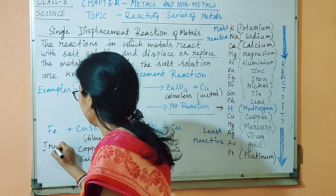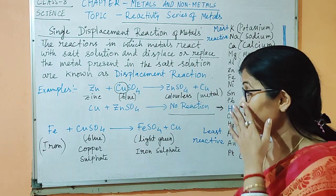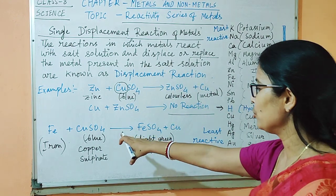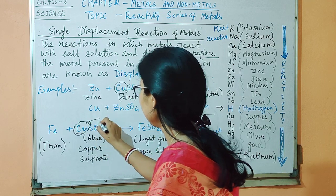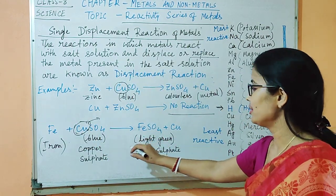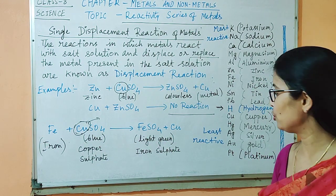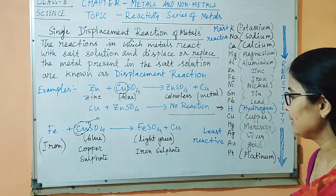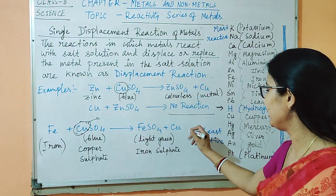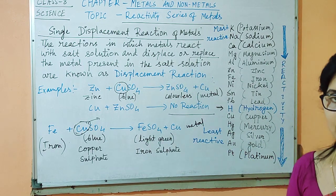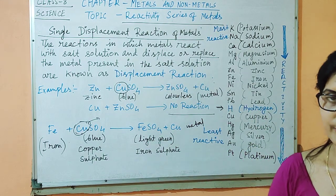Another example: when iron nails or iron chips are dipped into the blue color copper sulfate solution, copper is displaced by iron. The color of the solution slowly changes into a light green colored solution, which shows the presence of iron sulfate. If we are using an iron nail, then over the surface of the iron nail there will be a deposition of metallic copper. There are many more examples and chemical reactions in your textbook. Please write and practice those examples.